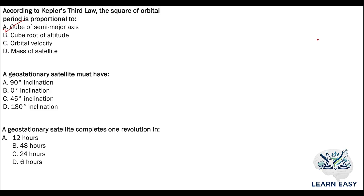Next question: a geostationary satellite must have — option A: 90 degree inclination; option B: 0 degree inclination; option C: 45 degree inclination; option D: 180 degree inclination. A geostationary satellite must have 0 degree inclination, that is option B.